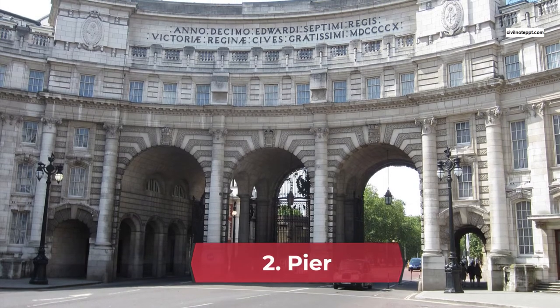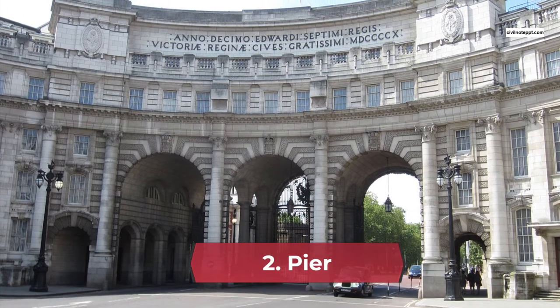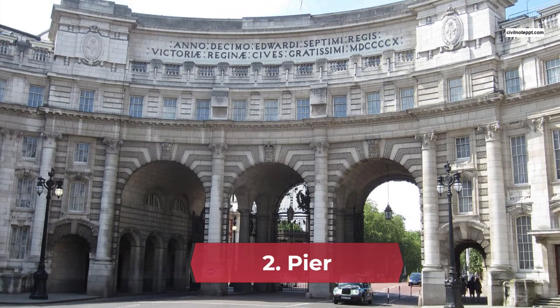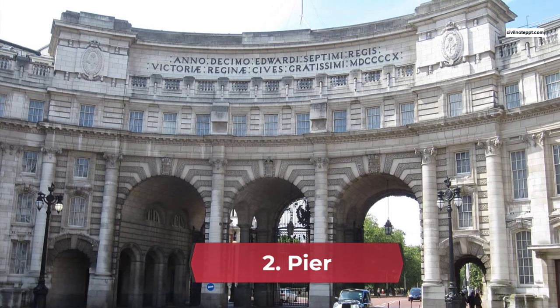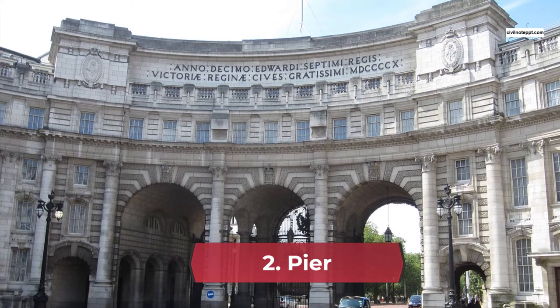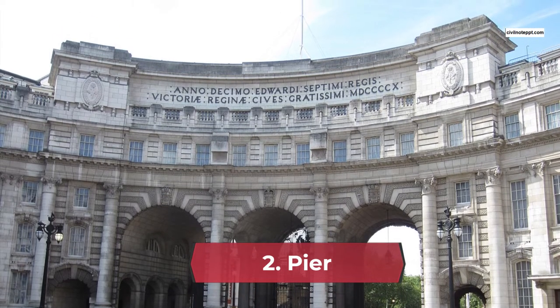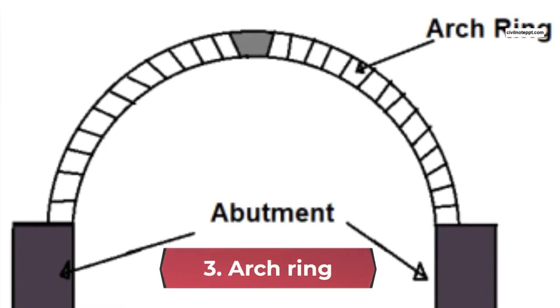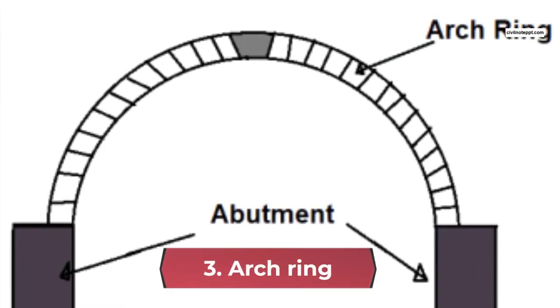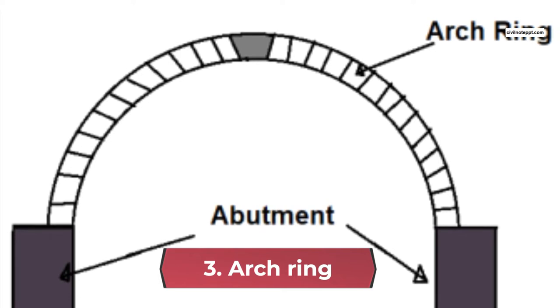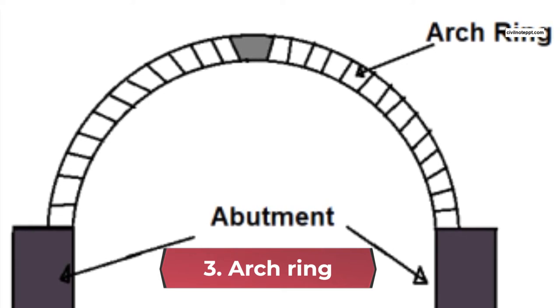2. Piers. Piers is also a supporting member of an arch, but it is the intermediate supporting member. Piers are used when a series of arches are constructed. 3. Arch ring. The arch ring is a course of wedge-shaped blocks arranged in a curved form and supported on the abutments or piers.